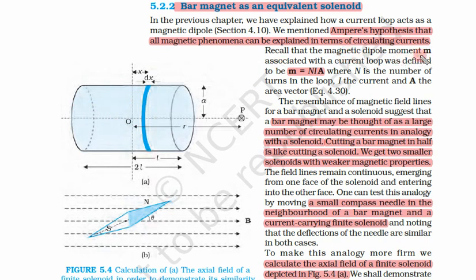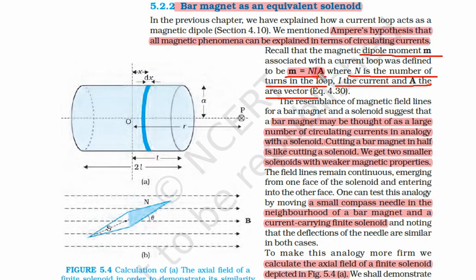Now remember one quantity: the dipole moment, or magnetic moment. The magnetic moment is simply current times area — ampere meter squared — and if there are n number of turns, this is multiplied by the number of turns. So it is n times I times A, where I is the current and A is the area vector. This is a vector quantity, while I and n are both scalar quantities.